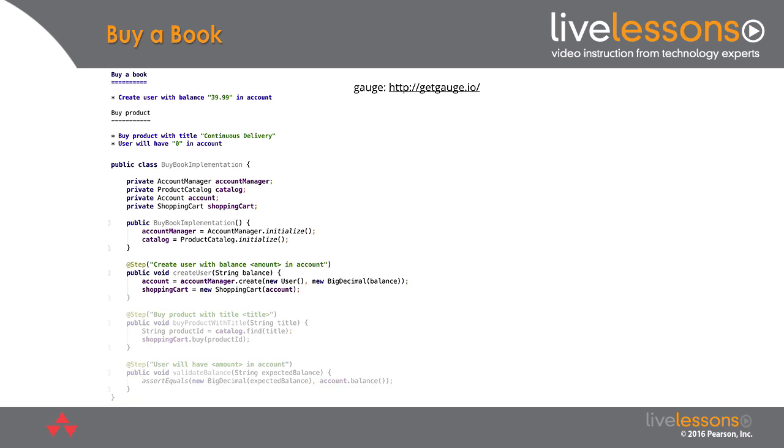Actually creating the user will run this method that creates a new account manager and a new shopping cart. And then buying the product will go and actually look for a product with the specified title and then buy it. And then validating at the end that the user has $0 left is going to actually execute an assertion to make sure there's no money left in the account.